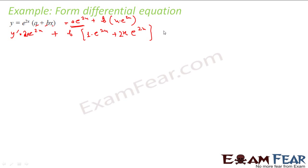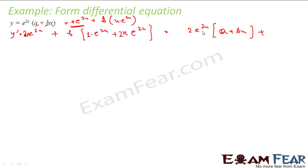Collecting terms, we get 2·e^(2x) in one place. Putting it together, we have 2(a + bx)·e^(2x) plus b·e^(2x). This simplifies with rearrangement, and this expression is y dash.